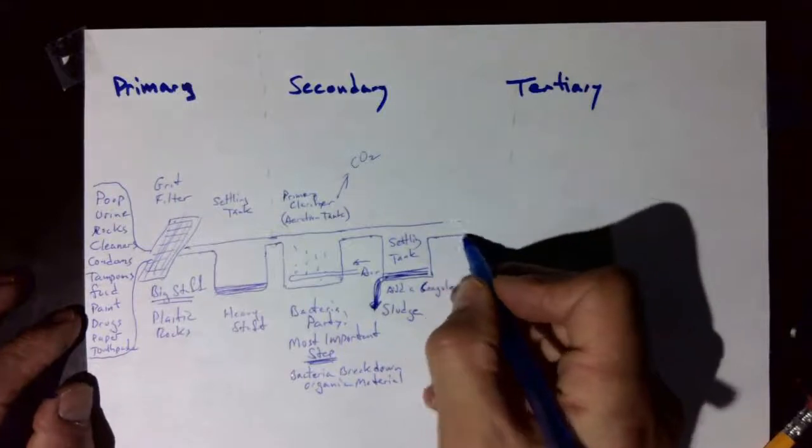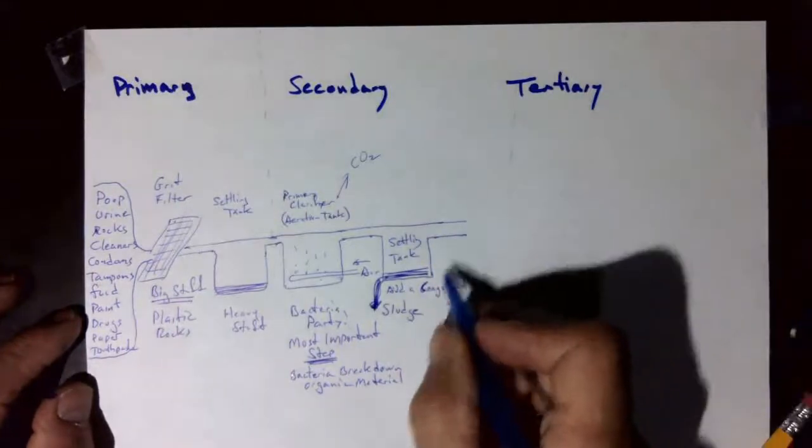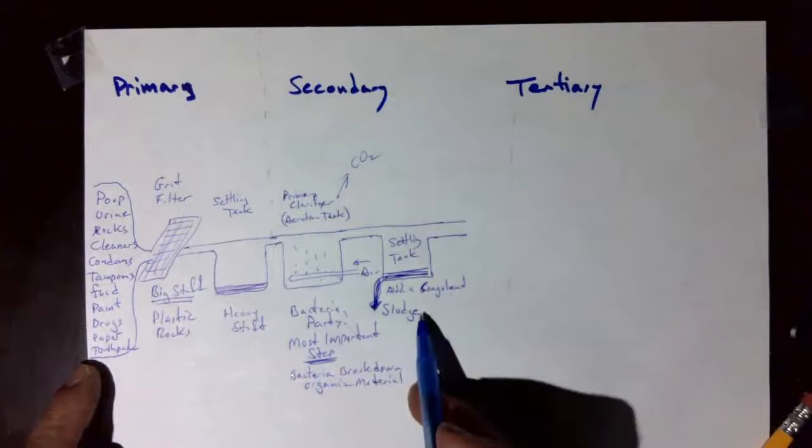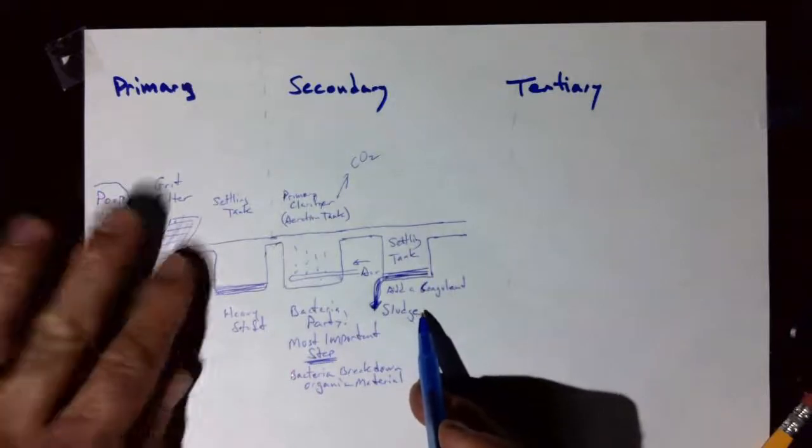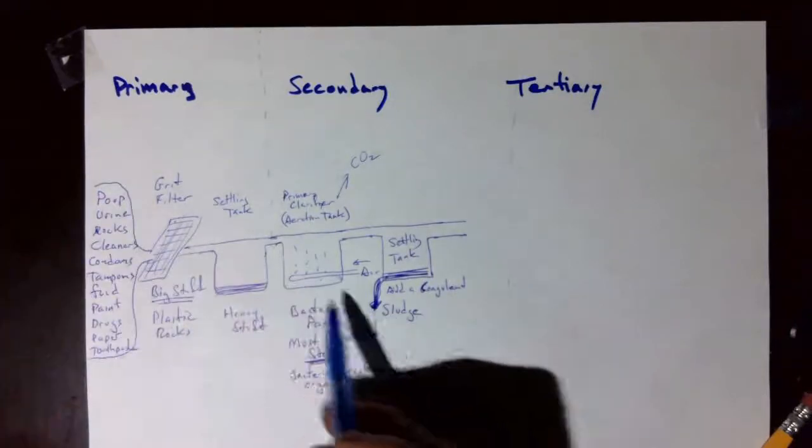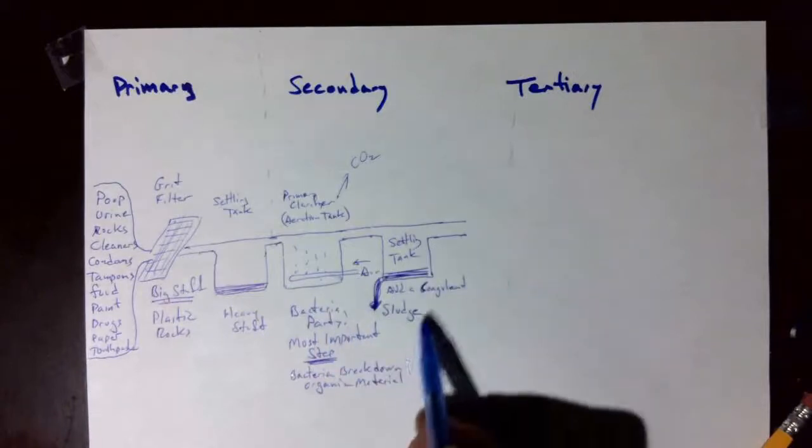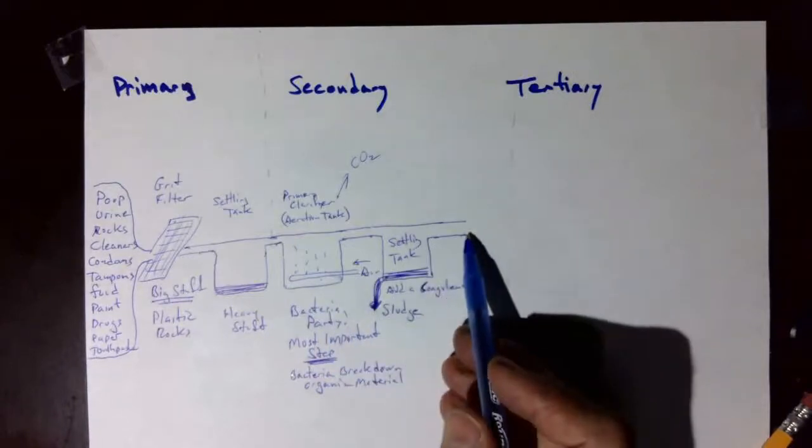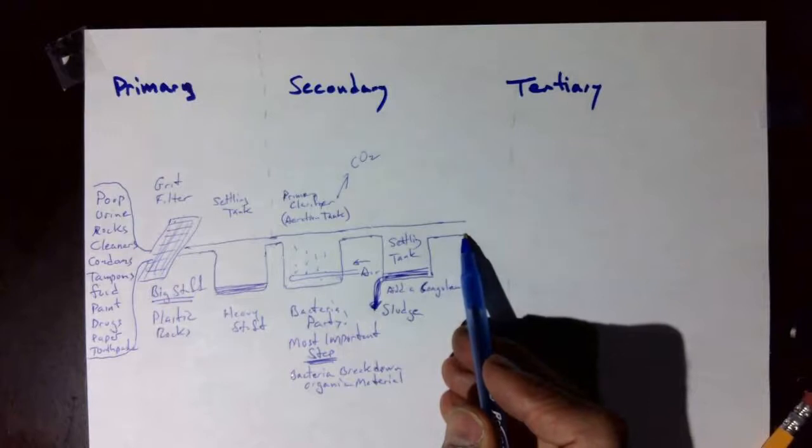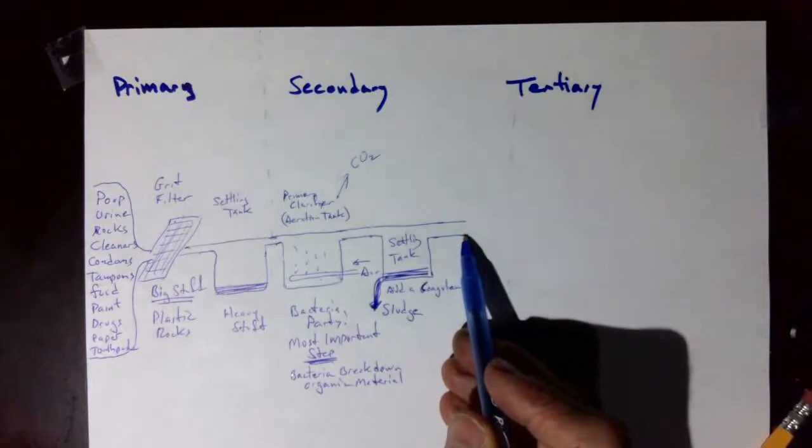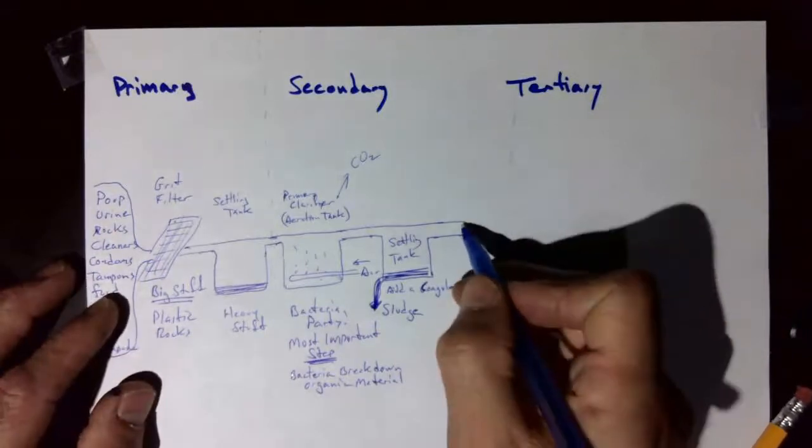Okay, so we're going to keep on going. Actually, that's the end of the story for a long time. Primary takes the big stuff out, secondary really got rid of almost all the organic stuff, and so that was good enough. We put that in the ocean or we put that in the river, and that's the end of sewage treatment.